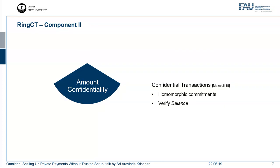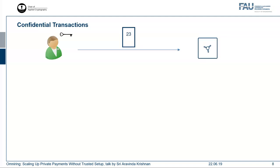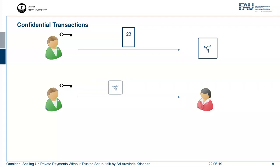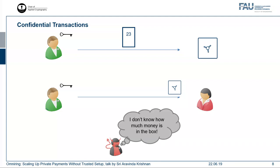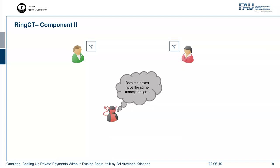The next component is amount confidentiality, achieved through Pedersen commitments in confidential transactions, which hides the amount inside a commitment while giving the capability to verify if the amounts are balanced. The sender puts the amount 23 inside a commitment and sends this commitment to the recipient. The adversary doesn't know what's inside. The opening information is passed to the recipient, who can verify what amount was inside. Any external user can verify if the amounts are balanced — that's the only information known to them.